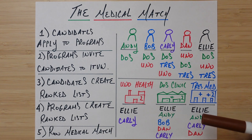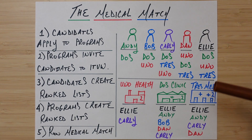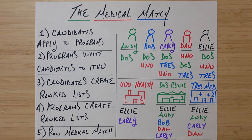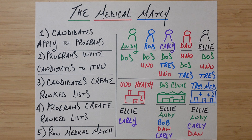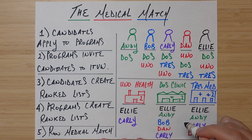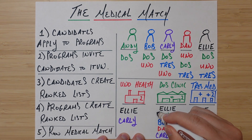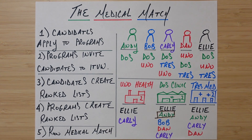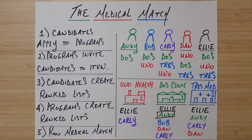That's one of the conditions of this algorithm: candidates cannot go to programs that don't list them, and programs can't accept candidates who don't list them. In this case, Andy is on the list for Dose Clinic, so we create a temporary match — right now Andy has a spot at Dose Clinic. Now we go on to Bob. Bob says he also wants Dose Clinic as his number one choice. We check and Bob is ranked there too.